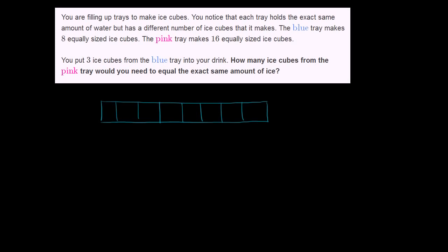Now the pink tray takes the same amount of water, so I'm going to make it the exact same length. The pink tray is the exact same length, but it has 16 equally sized ice cubes. So what I'm going to do is make these same sections here, but then I'm going to cut these sections in two. So that's eight into 16. I've got to divide these into two.